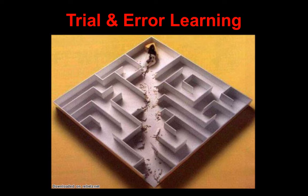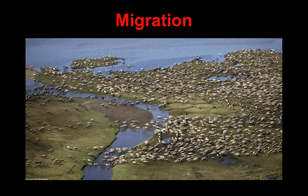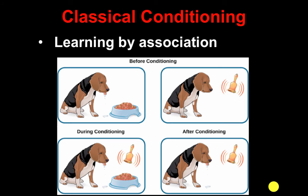Trial and error learning — that's fairly self-explanatory. Migration is moving to find food, water, or nesting sites. Classical conditioning is learning by association. In this case, you have a dog, and when you present food to this dog, it drools in anticipation of the food, but it does not do that with a bell. However, if we give food to the dog and every time we do we ring a bell, eventually the dog associates the bell's sound with the food, and just ringing the bell will cause the dog to drool. This is called classical conditioning.